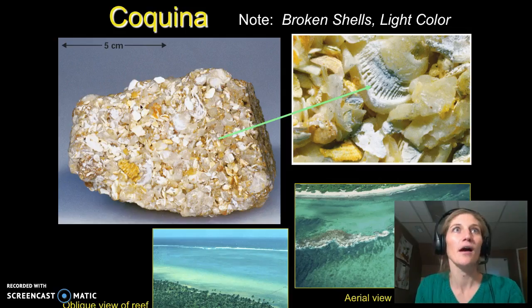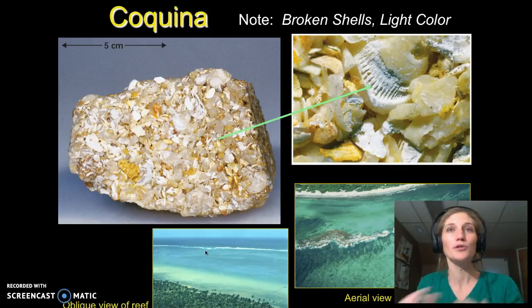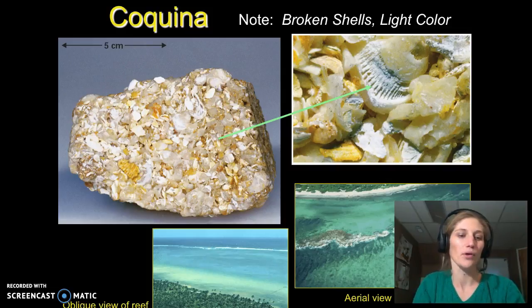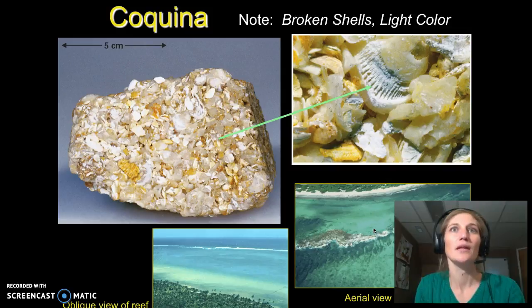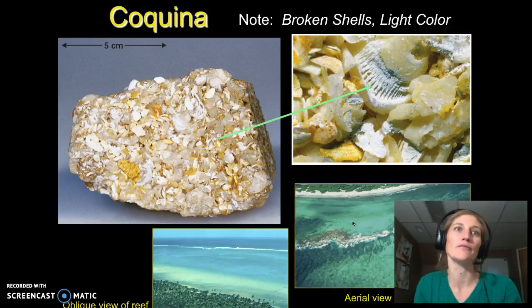Coquinas are made from broken shells that have been cemented together. These happen in places where we are close to a reef, but pieces and particles are getting picked up by waves and bashed together. Those broken shells form a sediment, and then they get compacted and re-cemented together. Looking at a view of a reef, coquinas can be forming on the inside after waves have washed over that reef, broken shells up, and deposited them down.